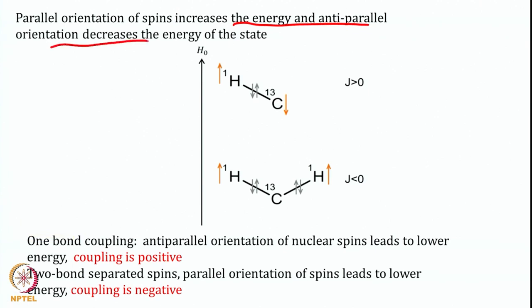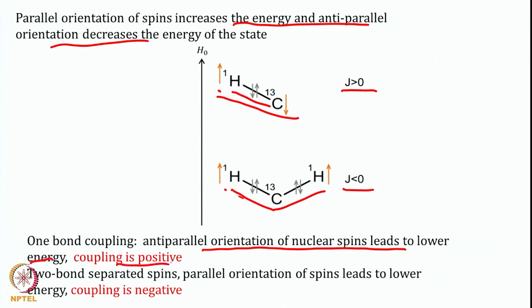Parallel orientation of spins increases the energy states and anti-parallel will decrease the energy states. If we look at coupling between H and C through a bond, if they are anti-parallel the energy is lower. So here J will be positive and here J will be negative. In the case of one-bond coupling, the anti-parallel orientation of nuclear spin leads to lower energy and that coupling is called positive. Whereas for two-bond separated spins, the parallel orientation of spins leads to lowering of the energy and this coupling is called negative.